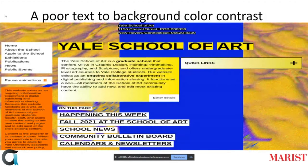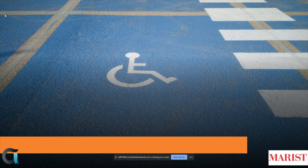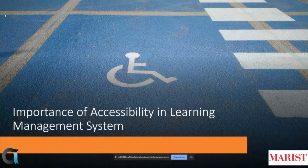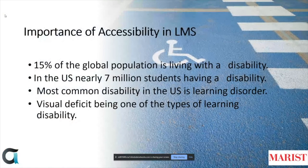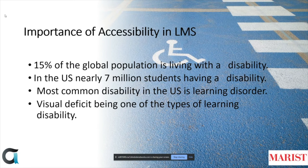Another example of what a website shouldn't look like: the demo image displays an uncoordinated background color choice, the text is broken and not well placed, and it lacks a professional look with no design included. According to the WHO, about 15% of the global population is living with a disability — about 10% of students across the world, and nearly 7 million students in America have a disability, with learning and visual deficits being the most common types.